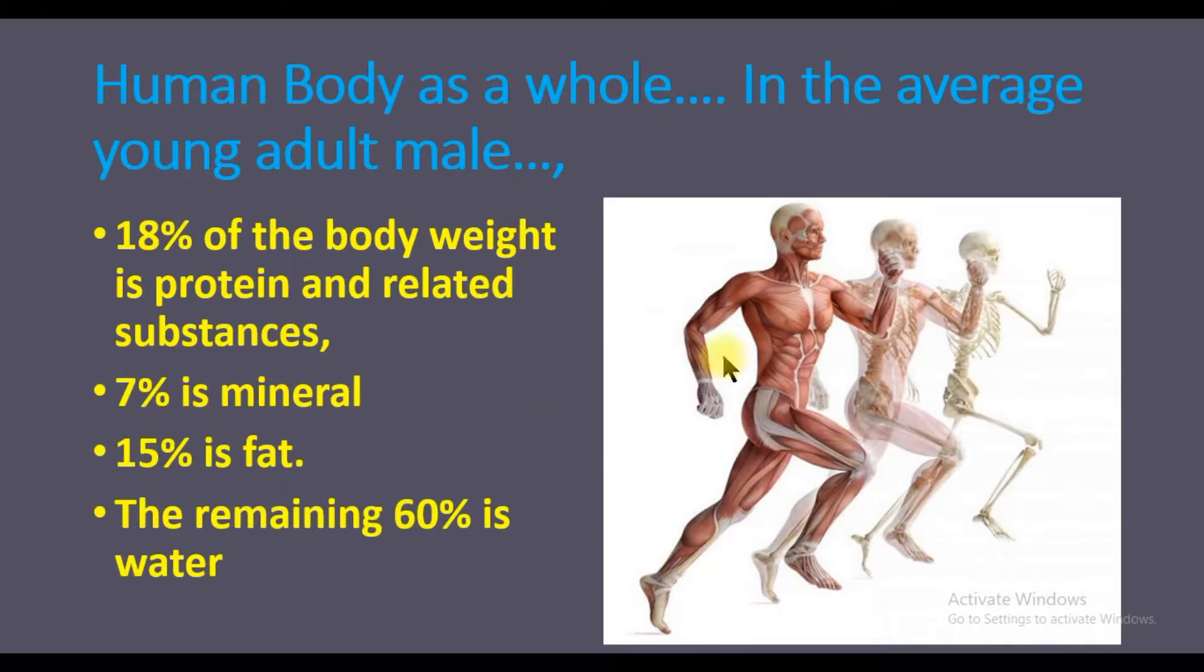When you look at the body as a whole, as far as chemistry is concerned, 18% of total body weight is constituted by proteins and related substances, especially proteins of muscles, internal organs, and bones. This is approximately 18% of total body weight in an average young adult male weighing approximately 70 kilograms.